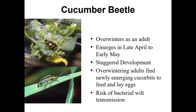They overwinter as adults and emerge in late April to early May. They'll feed on a variety of different food sources and have quite staggered development, so you don't see them in one big flush like some other insects. Those overwintering adults will find newly emerging cucurbit fields on which to feed and lay eggs. Typically, if you plant it, they will find it — even if there's not a huge history of cucurbit production in the immediate area.